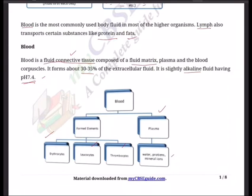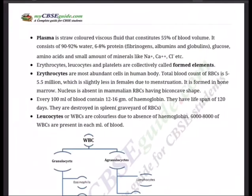Plasma is a pale yellow, transparent, and clear fluid. Water alone forms about 90 to 92 percent of the plasma. Plasma proteins constitute about 7 to 8 percent of plasma, and these mainly include albumin, globulin, prothrombin, and fibrinogen. Plasma without clotting factors is called serum. Plasma also contains glucose, amino acids, and small amounts of minerals like sodium, calcium, and chloride ions.